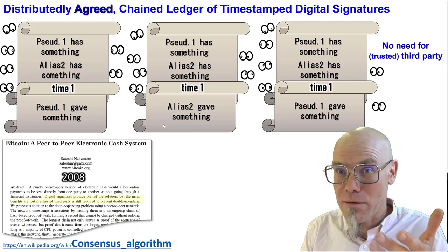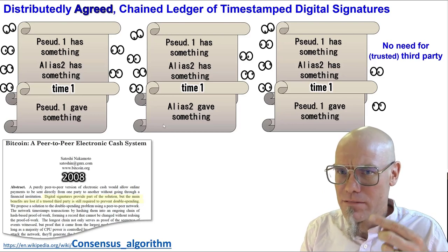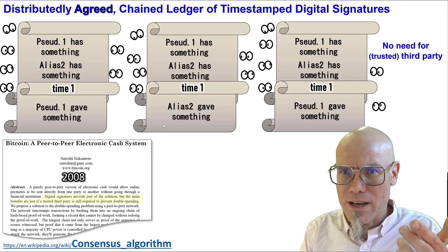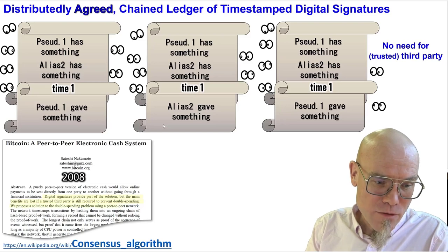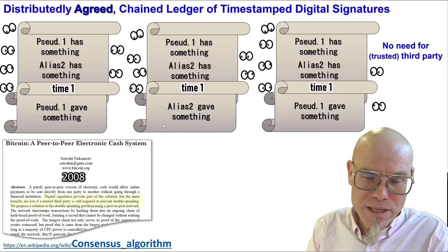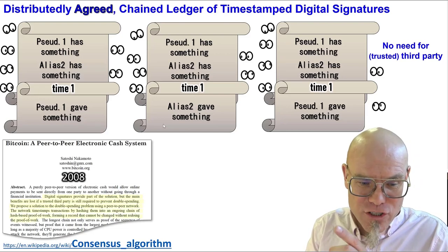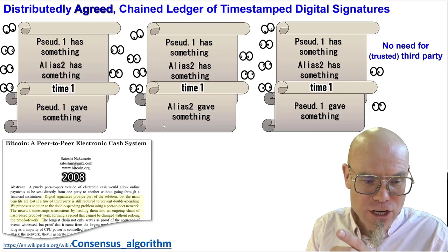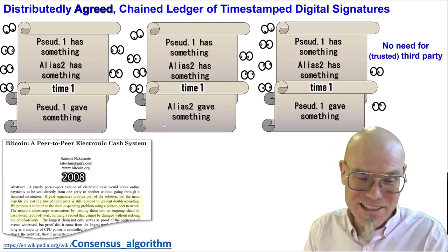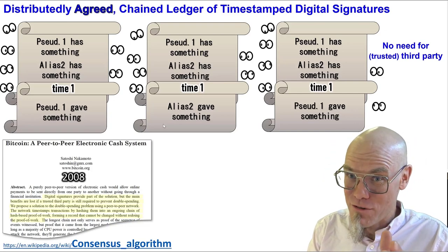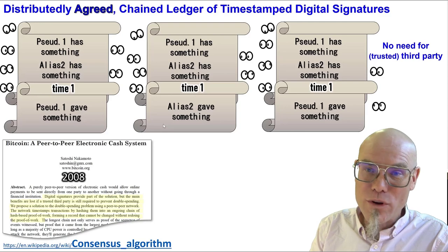If you already spent it, somebody has to look into your wallet. In banking, the bank does that — it says the check bounces, the hundred dollars are gone already, so you cannot take more out. So how do we do that if you don't have a bank to check what's actually in the world? We propose a solution to the double spending problem using a peer-to-peer network — make it distributed. The network timestamps transactions by hashing them into an ongoing chain of hash-based proof of work. That's the consensus algorithm. We do not know who Nakamoto is, by forming a record that cannot be changed without redoing the proof of work.